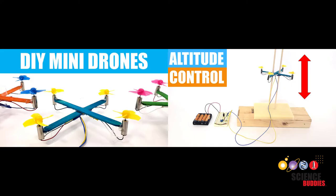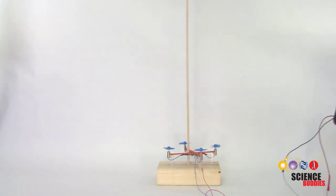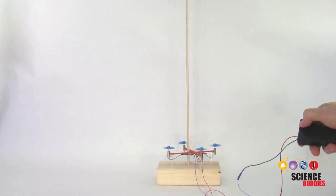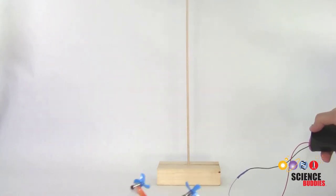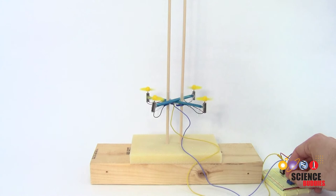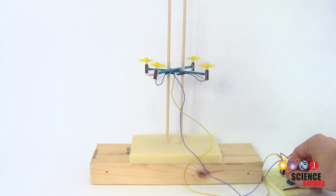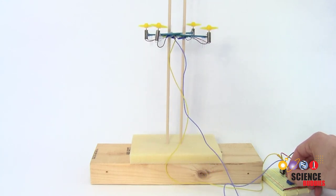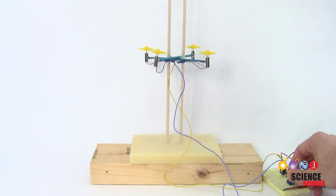There are two previous videos in this series also linked in the description. The first shows you how to build a basic drone with no control circuit. It simply lifts off and flies off the top of the guide pole. The second video shows you how to add a circuit with a knob to control the motor speed. This allows you to manually control the drone's height.